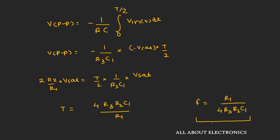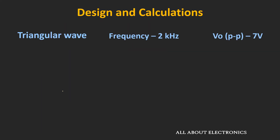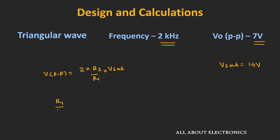Using these expressions, let's design a triangular wave with a frequency of 2 kHz and a peak-to-peak voltage of 7V. First, let's find R2 and R1 for the desired peak-to-peak voltage. The peak-to-peak voltage equals 2 × (R2 / R1) × V_set. Assuming the op-amp saturation voltage is 14V, the ratio R1 / R2 should equal 2 × 14 / 7 = 4. So the ratio of R1 to R2 should be 4.